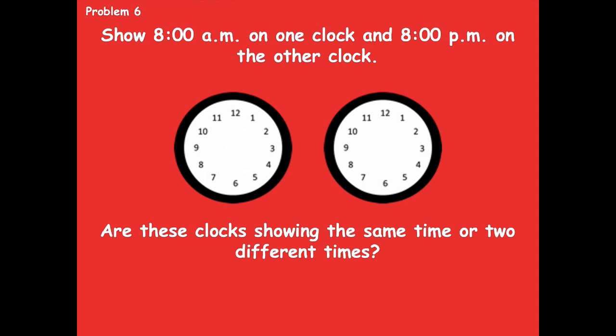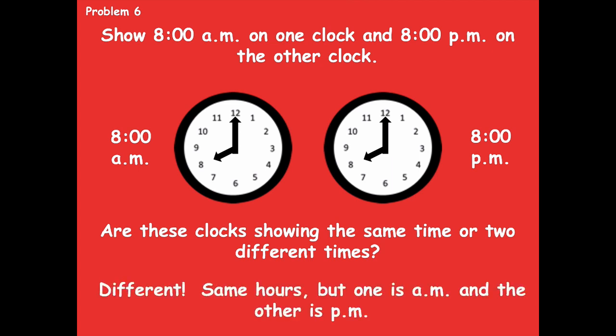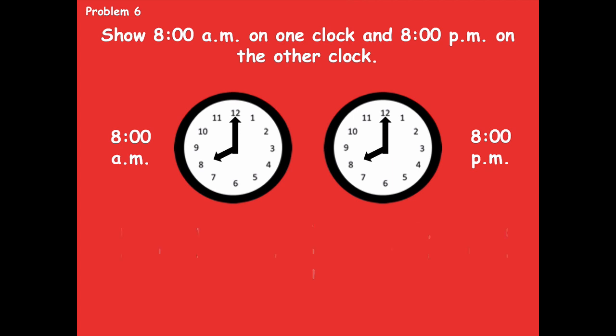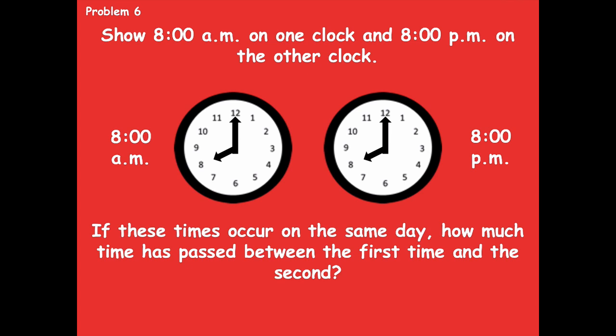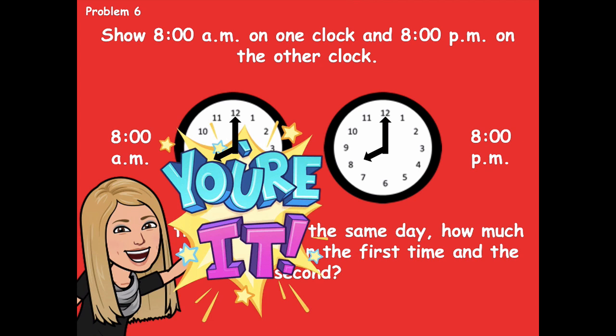The first clock shows 8 a.m. and the second shows 8 p.m. Are these clocks showing the same time or two different times? They're actually different. They're the same hour because they're both 8 o'clock, but one is a.m. and the other is p.m. — those are two very different times. A.m. is when you wake up in the morning, and p.m. is when you go to bed. So if these times occur on the same day — if you wake up at 8 a.m. and go to bed at 8 p.m. — how much time has passed? Pause the video, think about how you can solve that, and click play when ready.